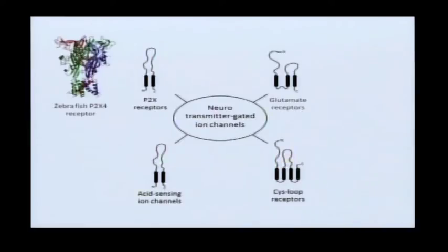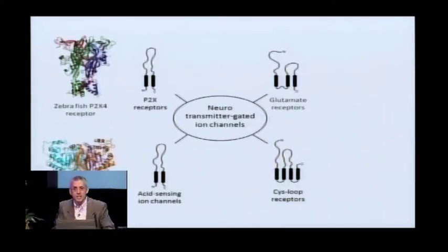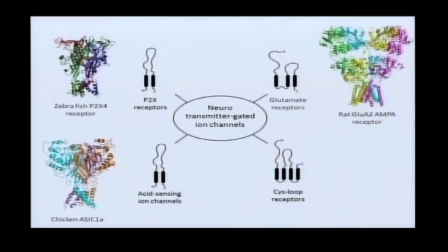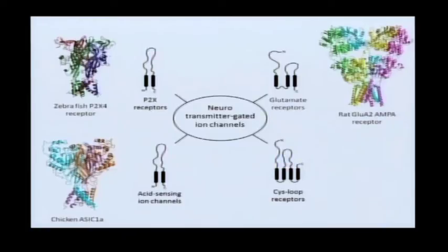This includes ATP-gated P2X receptors, of which we now have agonist-bound and APO states of the P2X4 receptor. We also understand a great deal about acid-sensing ion channels from structures in multiple different states, both desensitized and open states. Of course, we've learned a great deal about glutamate receptors, both from studies of isolated binding domains and, more recently, the intact structure. And then most recently, we have been able to elucidate the full structure of a eukaryotic, pentameric, glutamate-gated chloride channel.